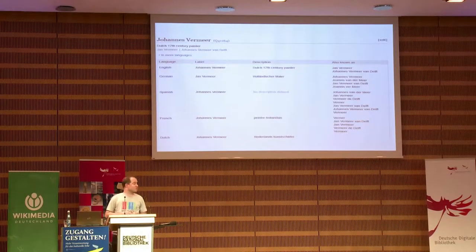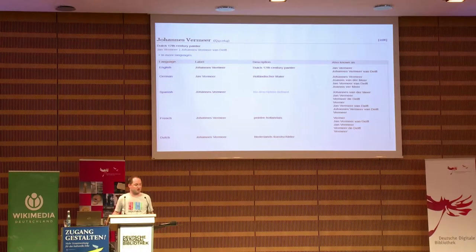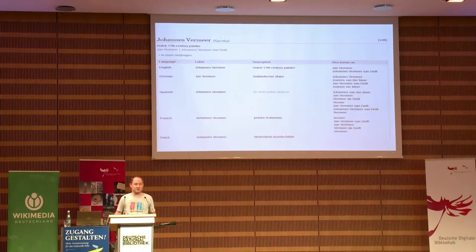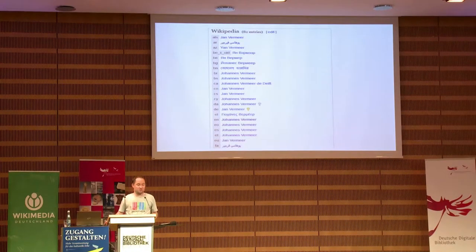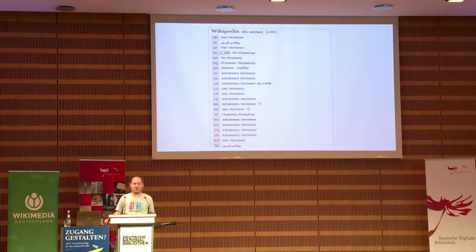The basic item structure is: you have the label, which describes what it is. Then a description, just a brief one. If you want to read more, you can always go to the Wikipedia article. And also aliases — for example, if you have Russian names, you might have like 50 different aliases, because there are so many ways to transliterate them. And of course the links to Wikipedia, where you can find more information. Besides the links, there are tiny little icons that indicate an article is really good — a quality article or a good article, something you might want to read. They're called badges.